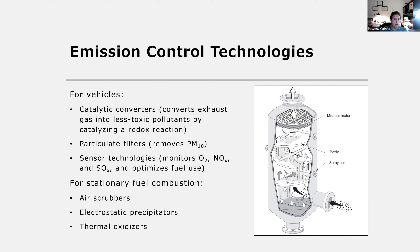Catalytic converters convert exhaust gas containing a number of different pollutants into less toxic pollutants by catalyzing a redox reaction. We also have particulate filters, which can remove PM10 particles before they enter the airstream, and sensor technologies which can make fuel use more efficient by monitoring oxygen delivery and pollutants like NOx and SOx. We also have stationary fuel combustion treatment technologies like air scrubbers, electrostatic precipitators, and thermal oxidizers — devices that generally use physical, chemical, or sometimes biological processes to remove or convert chemical pollutants into less toxic forms.